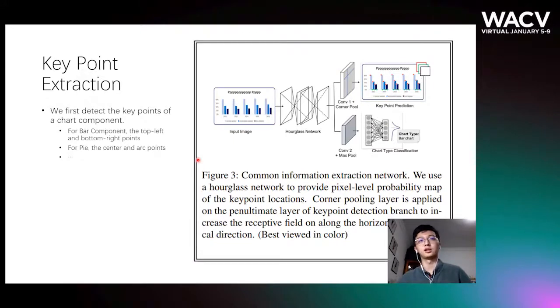The first step is key-point extraction. For different chart components, we define different key points and let deep neural networks extract them. For bar components, it's the top left and bottom right points. For pie charts, it's the center and arc points. For line charts, it's every data point.